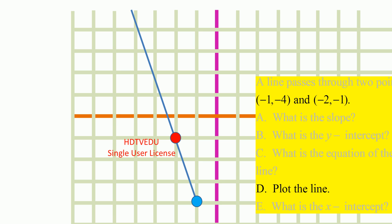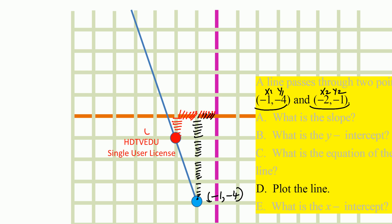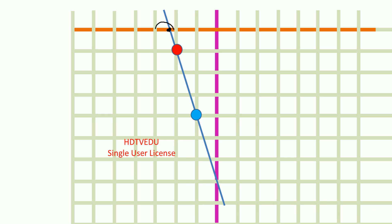Parts a, b, and c are done. Part d: can you plot the line? We plot the points: negative 1 negative 4, and negative 2 negative 1. Join those two points and you have the line. When you extend the line, you can see it touches the x-axis — that is the x-intercept — and it touches the y-axis at 0 negative 7, which is the y-intercept.